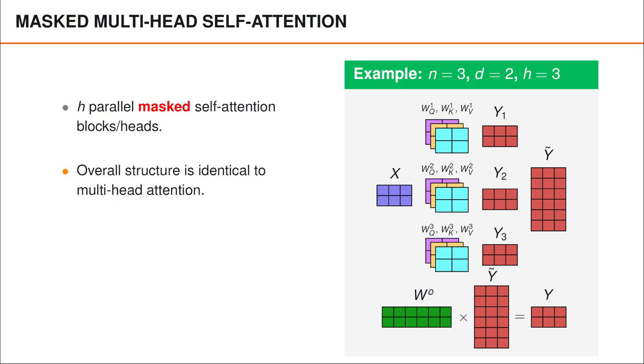The overall structure of the multi-head attention layer is the same as in the encoder, and we first concatenate the different Y matrices computed by the different heads before multiplying this tall matrix with the matrix WO to obtain an output Y, which has the same dimension as the input X. The only difference is that the outputs yi from the different self-attention heads are computed using masked self-attention to ensure that the embeddings never depend on later input words.